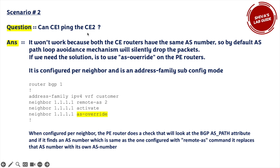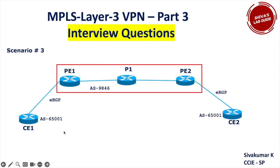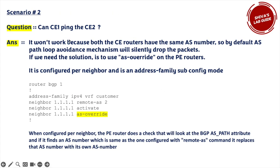For scenario three, whether CE1 can ping CE2 — it would NOT work. Both CE routers have the same AS number. The AS path loop avoidance mechanism means when a route from CE1 arrives at CE2 with CE2's own AS number in the AS path, CE2 will drop that packet. By default, the AS path loop prevention mechanism silently drops those packets — you won't see any log message unless you enable BGP debug.